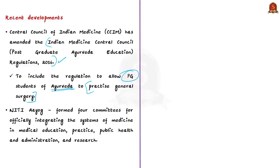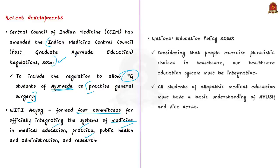In addition to this, Niti Aayog has formed four committees for officially integrating systems of medicine in medical education, medical practice, public health and administration, as well as research. But these decisions were not taken lightly by the Indian Medical Association, which is a national voluntary organization of doctors of the modern scientific system of medicine.